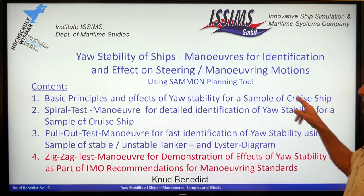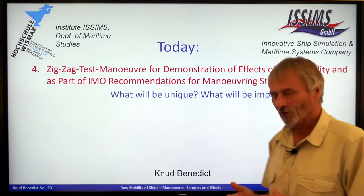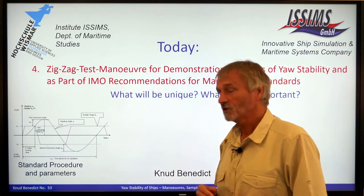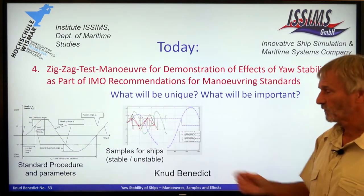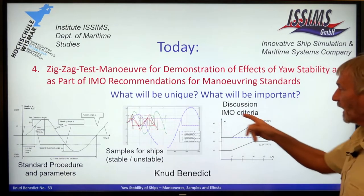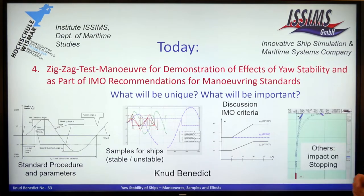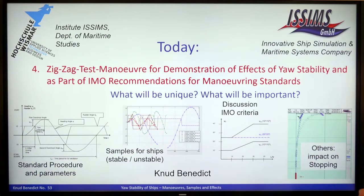This is the plan for today. Surely it's our fast time simulation, but I will start with some standard procedures and explain the parameters. Then followed by some samples for ships for stable and for unstable behavior. Then I will explain and discuss the IMO criteria on maneuvering standards with respect to the zigzag test. And finally we will have some other issues, for instance, the impact of yaw stability on stopping of ships on the track during the crash stop maneuver.